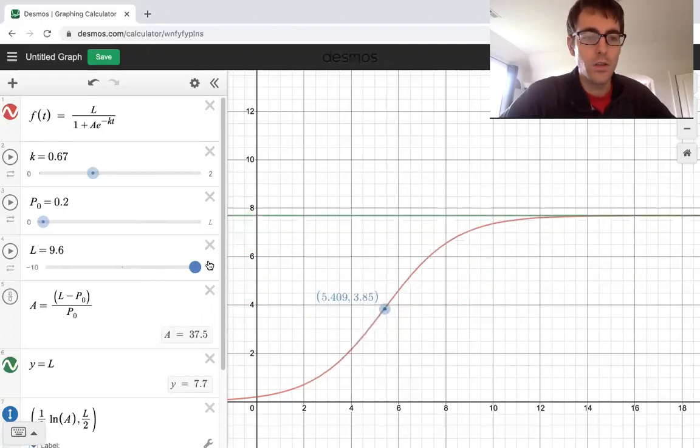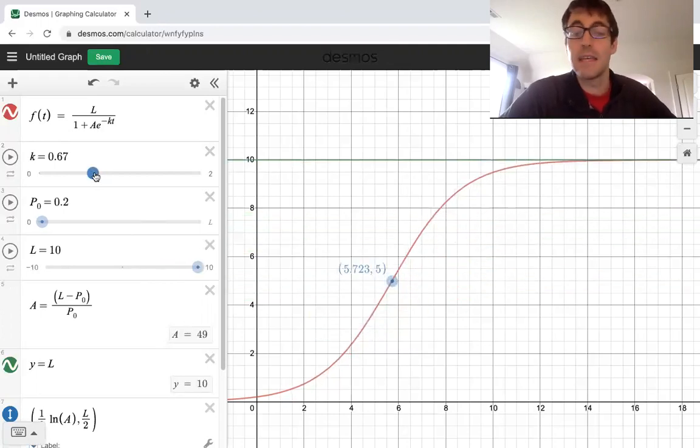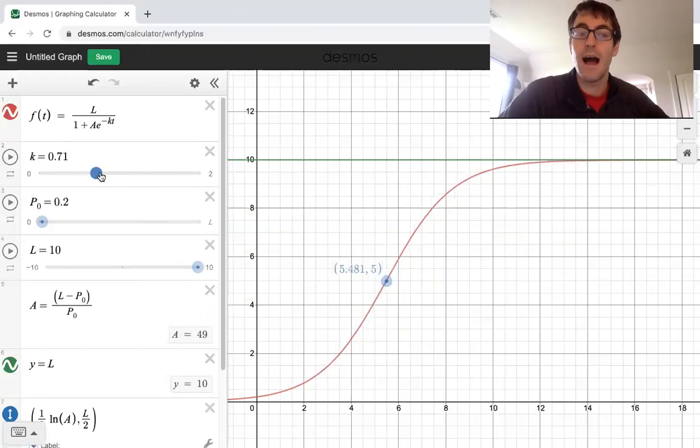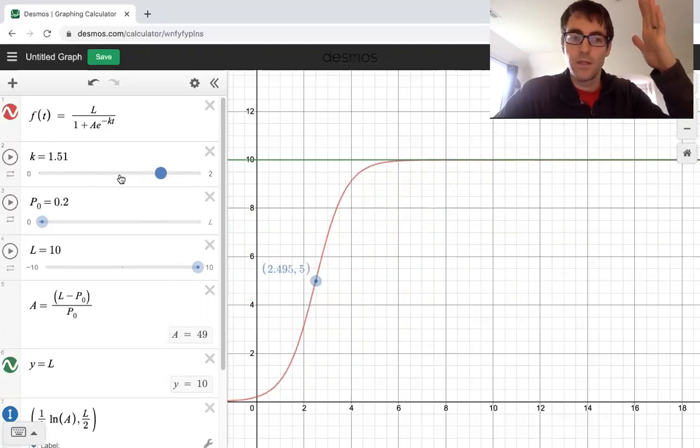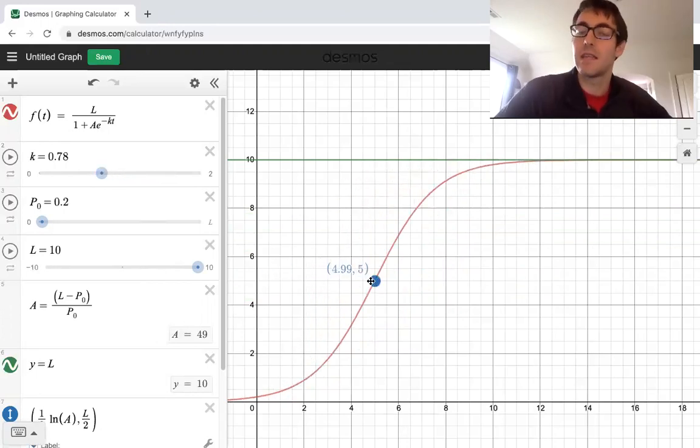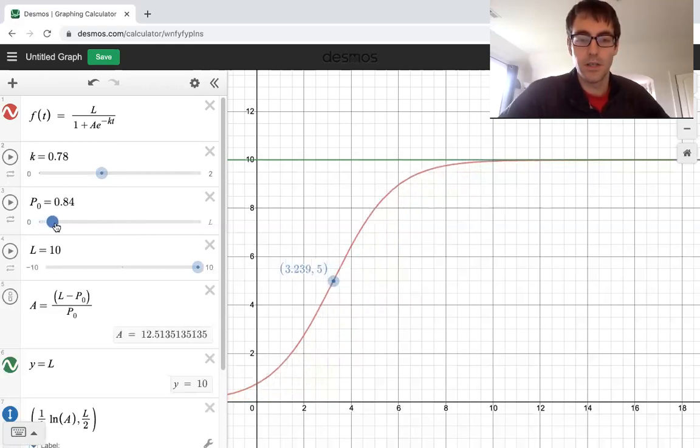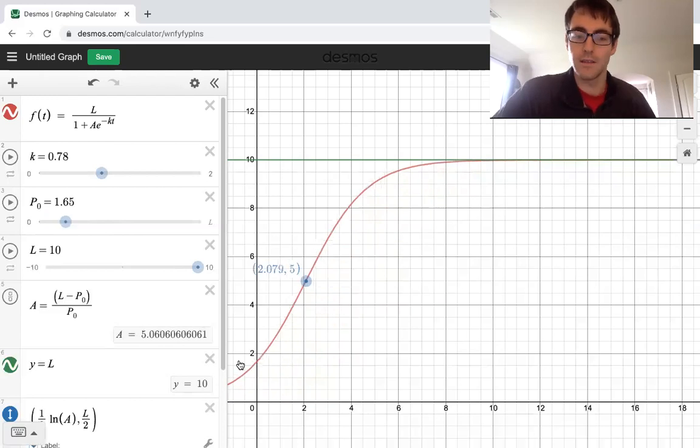We could also mess with the K. So for a higher value of K, that means we're increasing faster. And we see that the point is the halfway point. And if our initial, if our starting position increased, we can see that the place where this intersects zero is increasing.